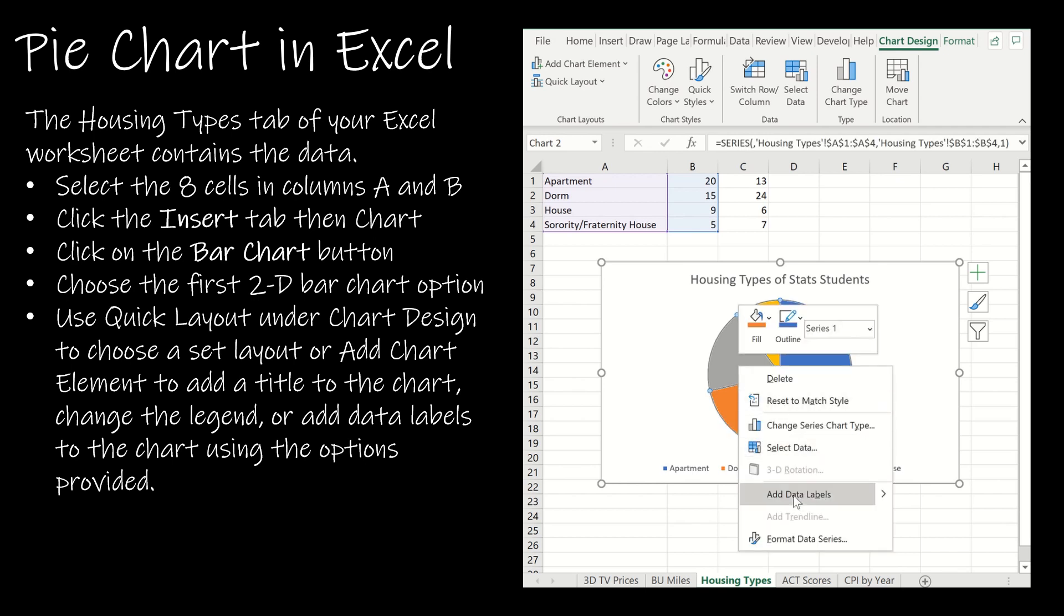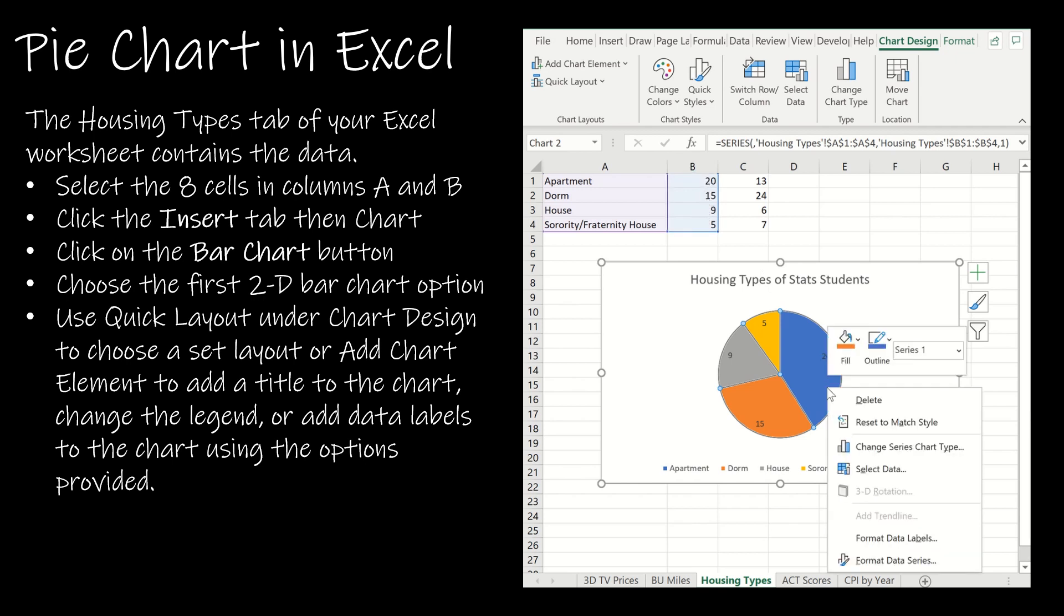I would change my title to 'Housing Types of Stats Students.' I already have a legend, and I can add data labels. If I add data labels, it shows the values: 20, 15, 9, and 5. Perhaps I want to see a percentage instead, so I choose percentage and get rid of value. That should be everything I need on this pie chart.